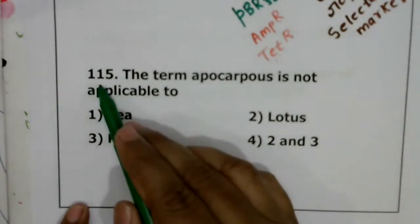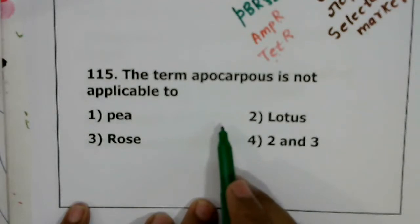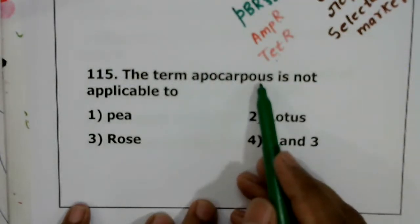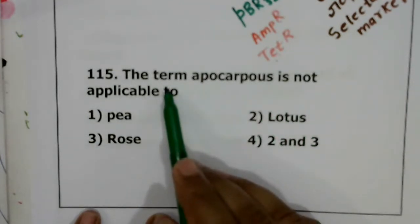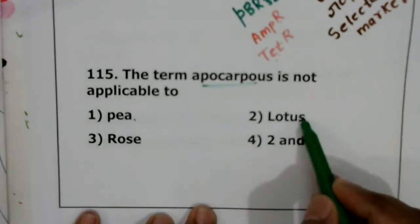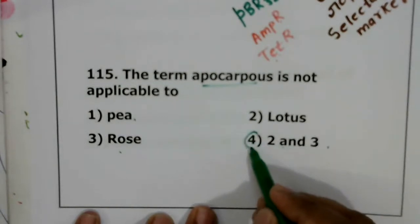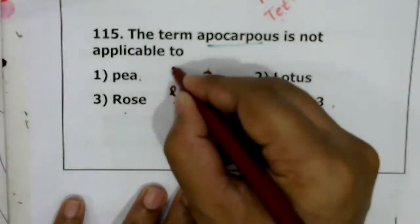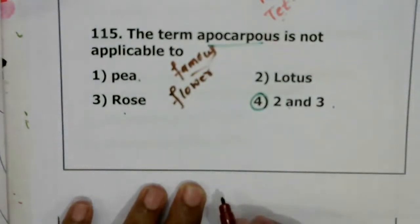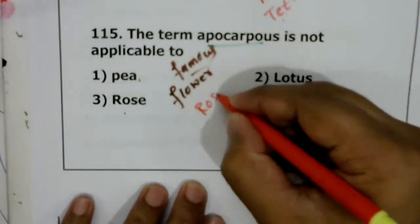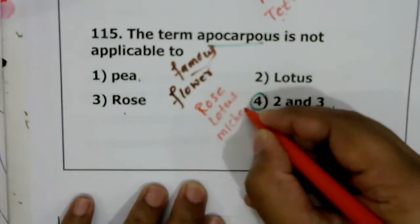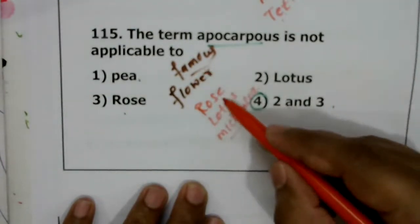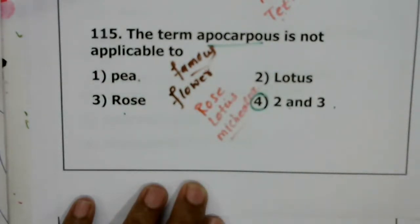Question 115: the term apocarpous is not applicable to which plant? If all carpels are free, it is apocarpous; if fused, it is syncarpous. Examples of apocarpous plants are rose and lotus. Remember: famous flower plants — rose, lotus, Michelia — are all apocarpous. The correct answer is that the term is not applicable to both rose and lotus being excluded — the correct answer is rose and lotus as apocarpous examples. Question 115, second option.